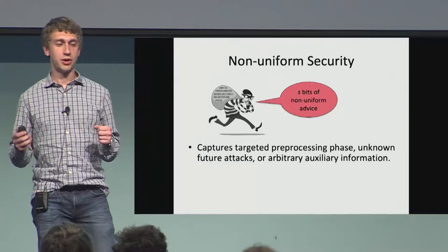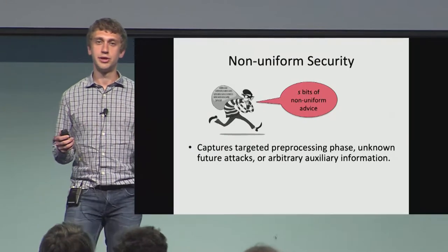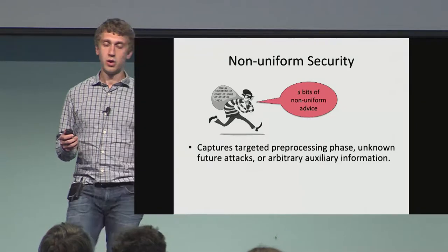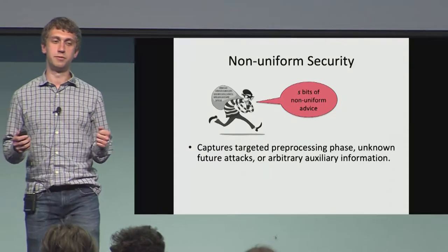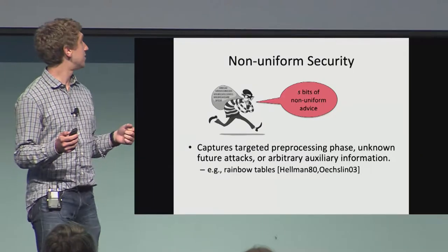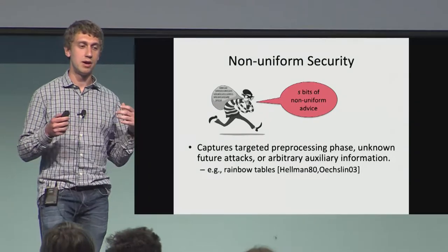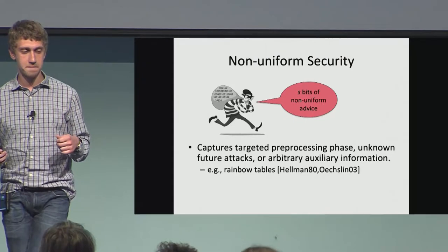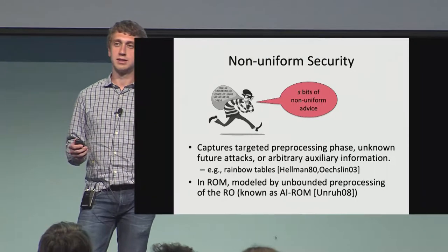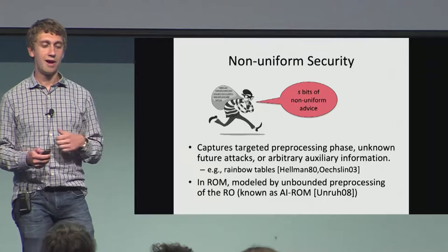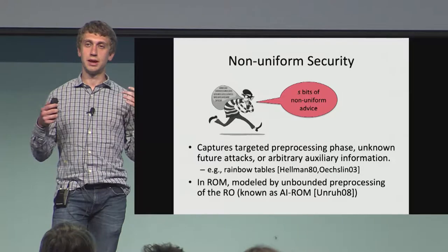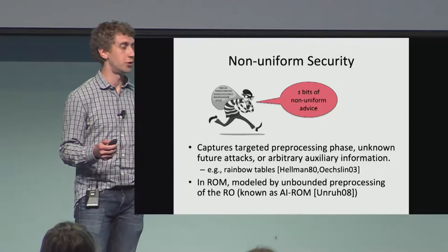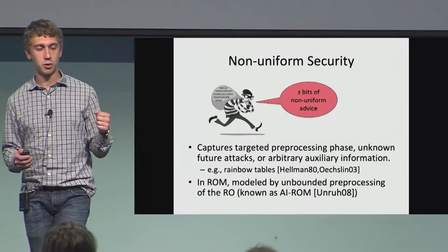Non-uniform security has become the de facto standard in our community because it captures a targeted pre-processing phase, unknown future attacks, or arbitrary side information before the protocol starts. One example is rainbow tables, where you can spend a long time computing a large pre-computed table to attack specific instances of a hash function. In the random oracle model, we can consider a similar notion of non-uniform security where you have unbounded pre-processing of the random oracle, as long as the resulting output during the attack has bounded size. This model is known as the auxiliary input random oracle model, introduced and formalized by Unruh in 2008.